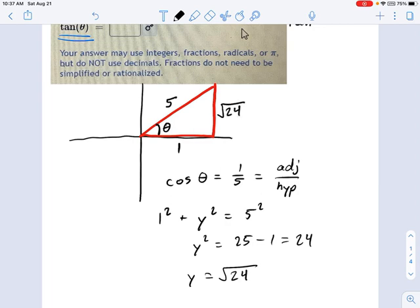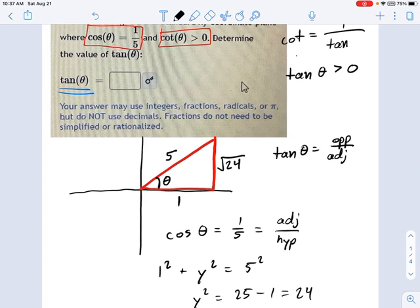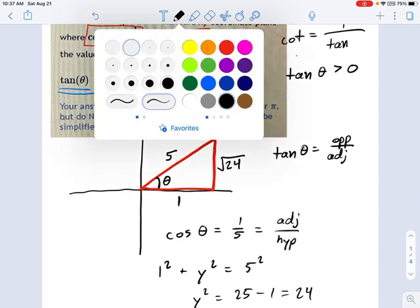Now I have a complete triangle. This is one of the major goals. You have to get a complete triangle before you can finish the problem. Tangent of theta? Well, tangent, if you remember, is opposite over adjacent. So the opposite of theta is square root of 24, and the adjacent is just the number 1.